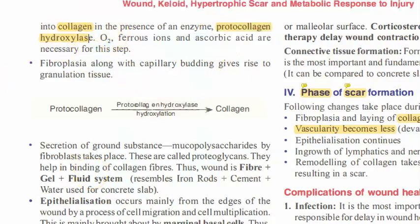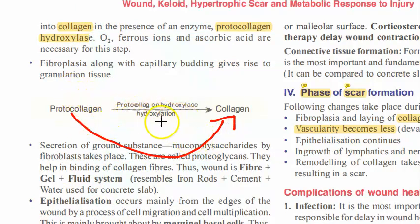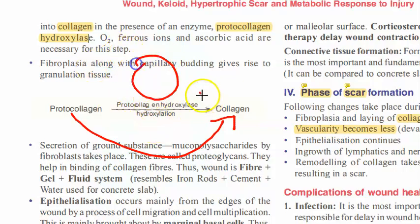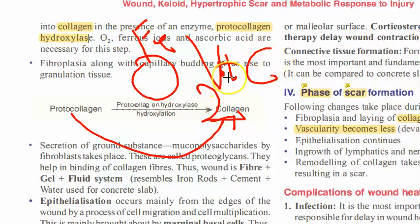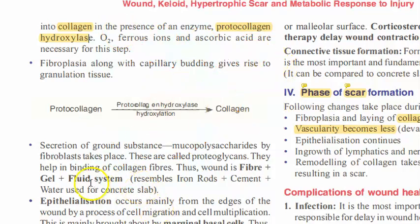Protocollagen is becoming collagen — this is the proliferative phase where fibroblasts are proliferating. The process involves protocollagen hydroxylase in a hydroxylation step. What is required for this step? You need oxygen, ferrous ions, and ascorbic acid — that is vitamin C. That is why for healing they give vitamin C and iron. Oxygen, iron, and vitamin C are all required for this step.